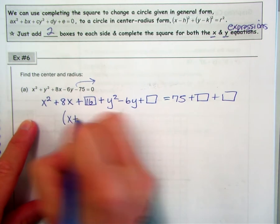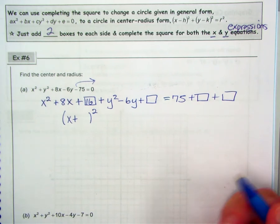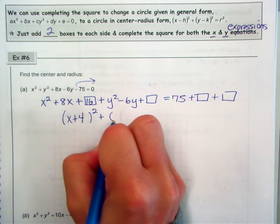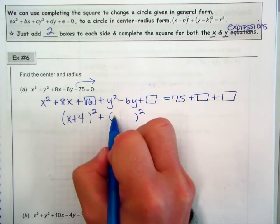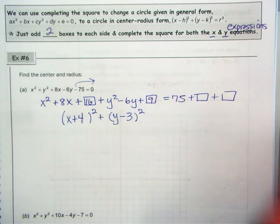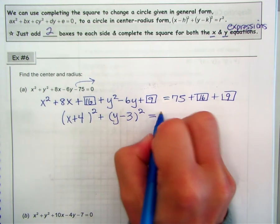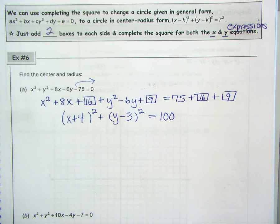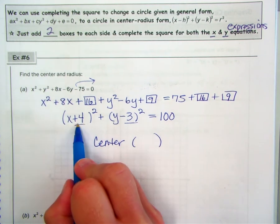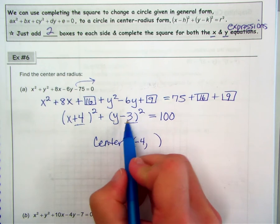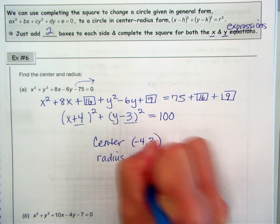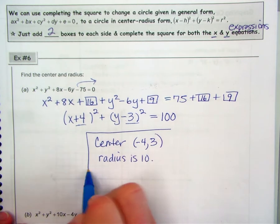To complete the square: half of 8 is 4, and 4 squared is 16, so this becomes x plus 4 squared. For the y term, 3 doubles to 6 — same sign as the middle term — and 3 squared is 9. Add 16 and add 9, giving us equal to 100. So we complete the square to find the center: opposite of positive 4 is negative 4, and opposite of negative 3 is positive 3. Our center is (negative 4, 3) and our radius is 10, since 10 squared is 100.